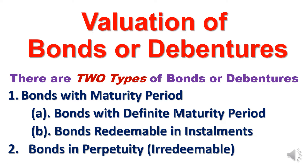The second category is bonds in perpetuity, meaning irredeemable. These bonds will not be redeemed until the existence of the company. Once the company is closed, only then the amount is payable. It will not be paid during the lifetime of the company. That is called perpetuity or irredeemable bonds.